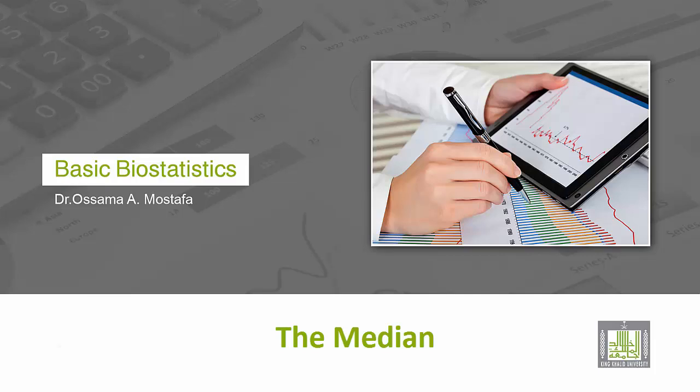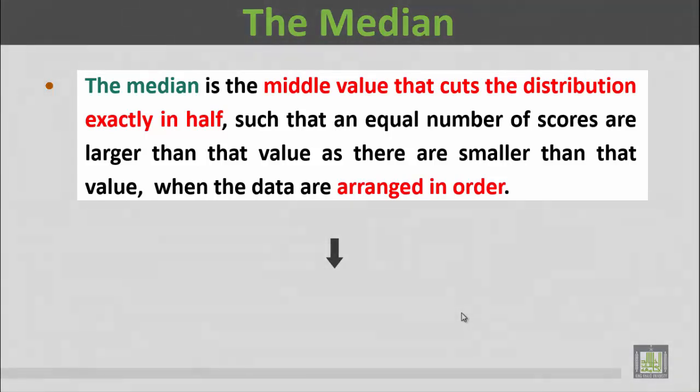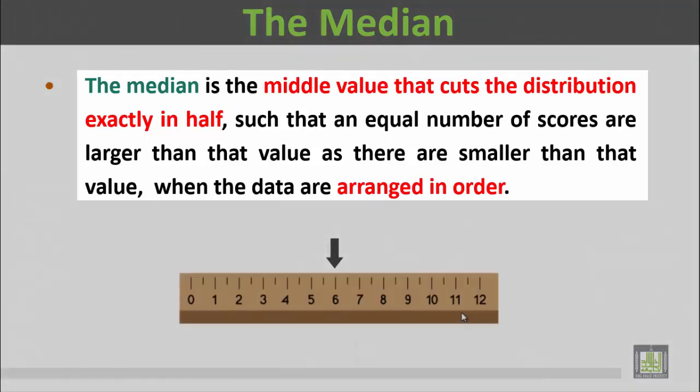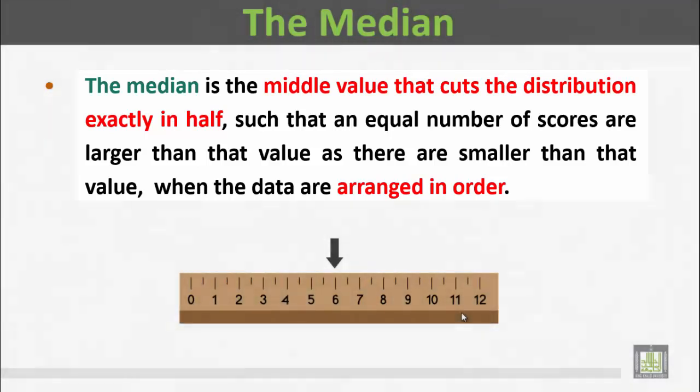The median is the middle value that cuts the distribution exactly in half, such that an equal number of scores are larger than that value as there are smaller than that value when the data are arranged in order.